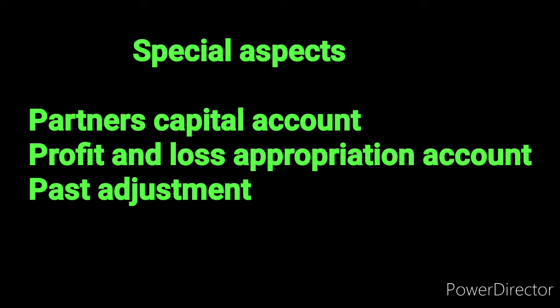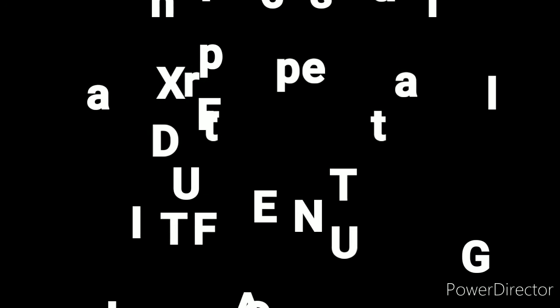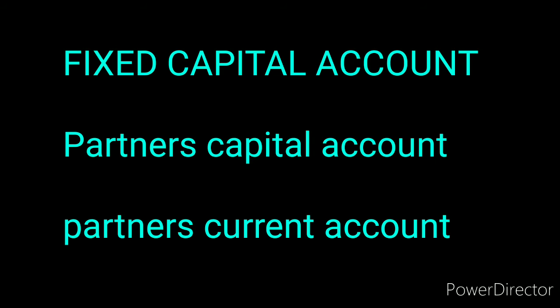Regarding maintenance of partners capital accounts — there are two kinds. One is the fixed capital account and the other is the fluctuating capital account. In the fixed capital method, two accounts are prepared: the partners capital account (dealing only with capital contributions and permanent withdrawals) and the partners current account (handling all other adjustments). In the fluctuating capital method, everything — beginning capital, additional capital, drawings, interest on drawings, salary, interest on capital — is recorded in one single account.